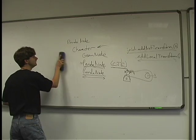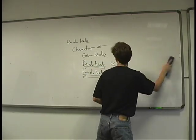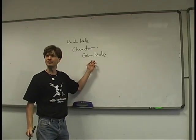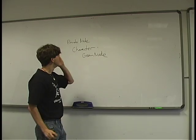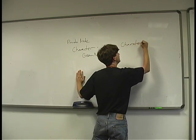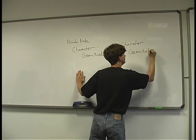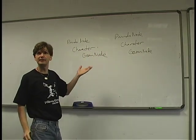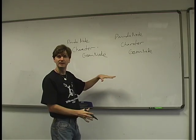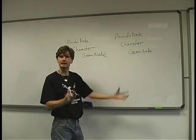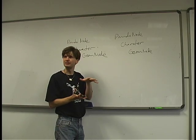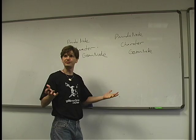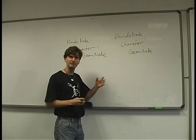An important Panda optimization is minimizing the number of GeomNodes. Panda has a function called flattenStrong() — when you have a big scene graph with lots of GeomNodes, calling nodePath.flattenStrong() collapses them into as large GeomNodes as possible, ideally just one, if they share the same render state. This lets you render all those vertices in one draw call instead of many, which matters when you have a budget of around 300 render calls per frame.